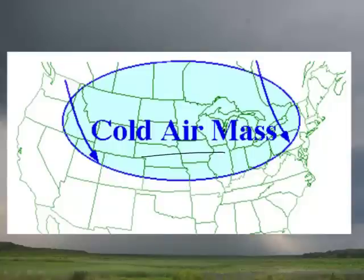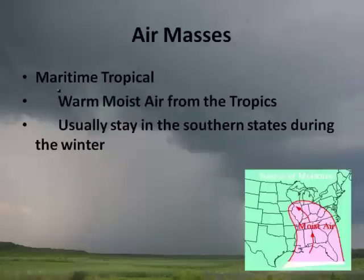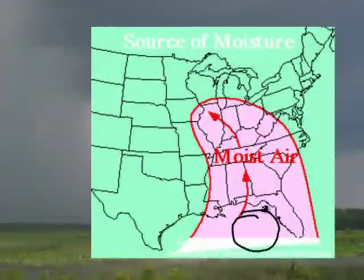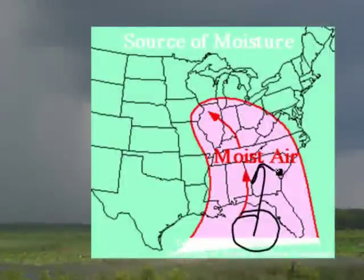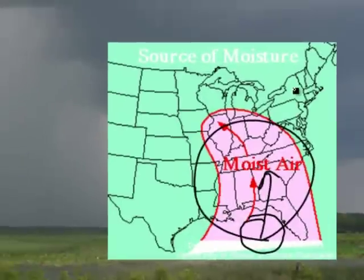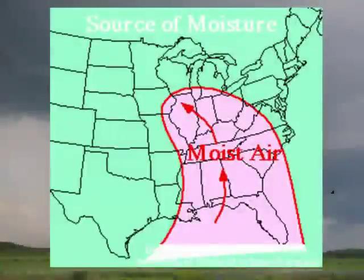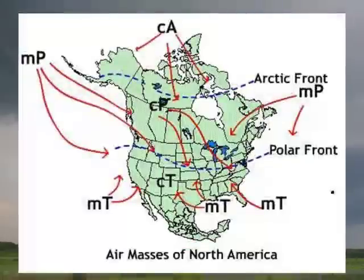Maritime tropical air masses bring warm, moist air from the tropics and usually stay in the southeast. Often, warm moist air comes up from the Gulf of Mexico — that's where the region gets lots of precipitation and is also a very humid part of the United States. In the summer, you get all kinds of exciting weather activity there.